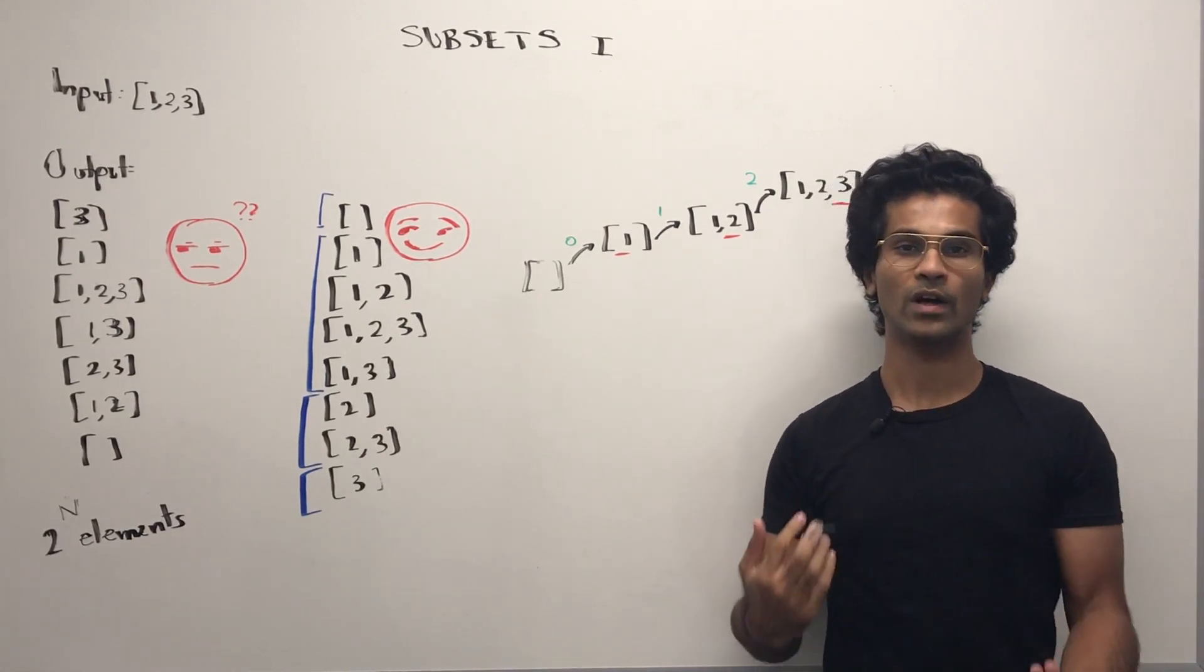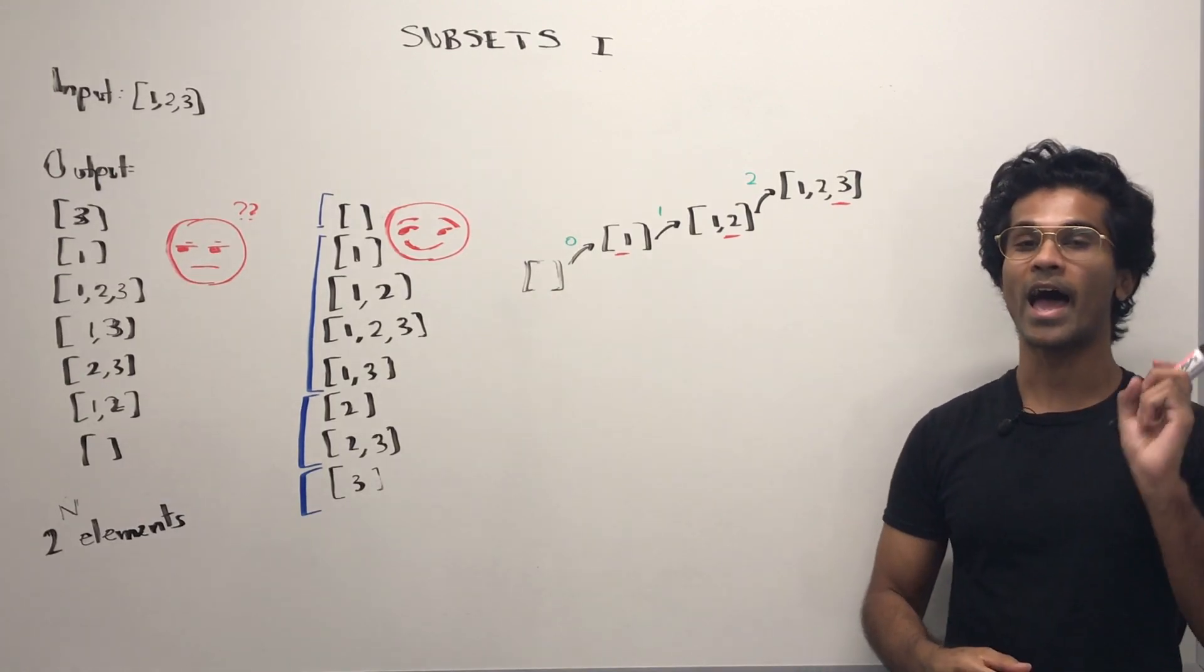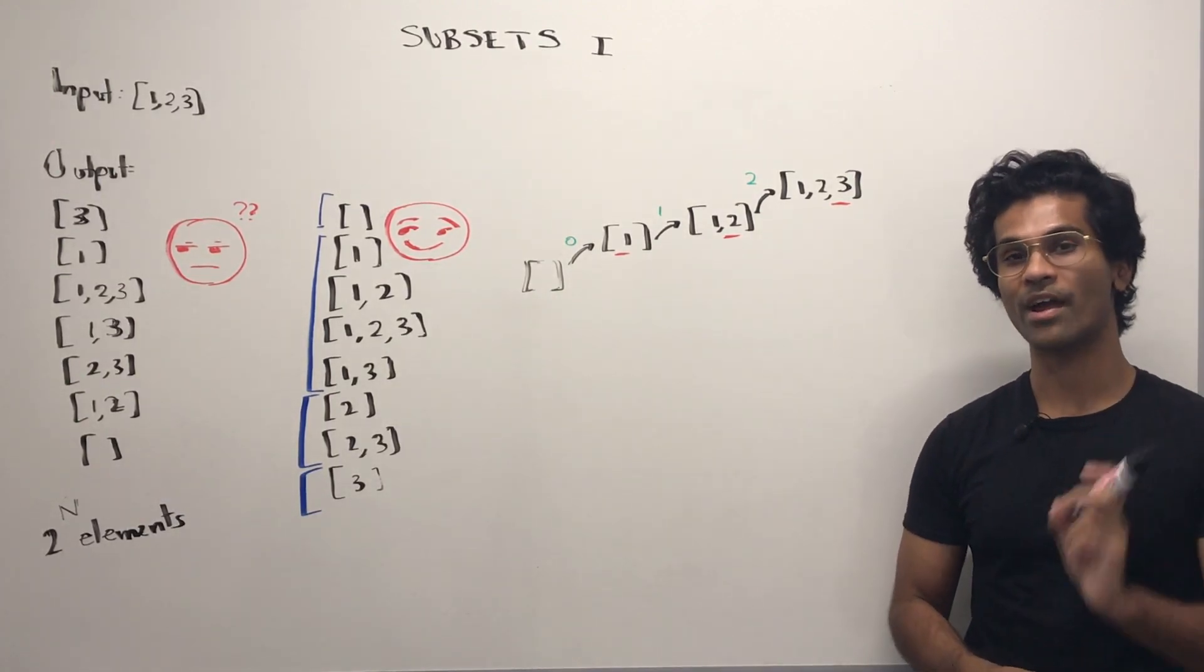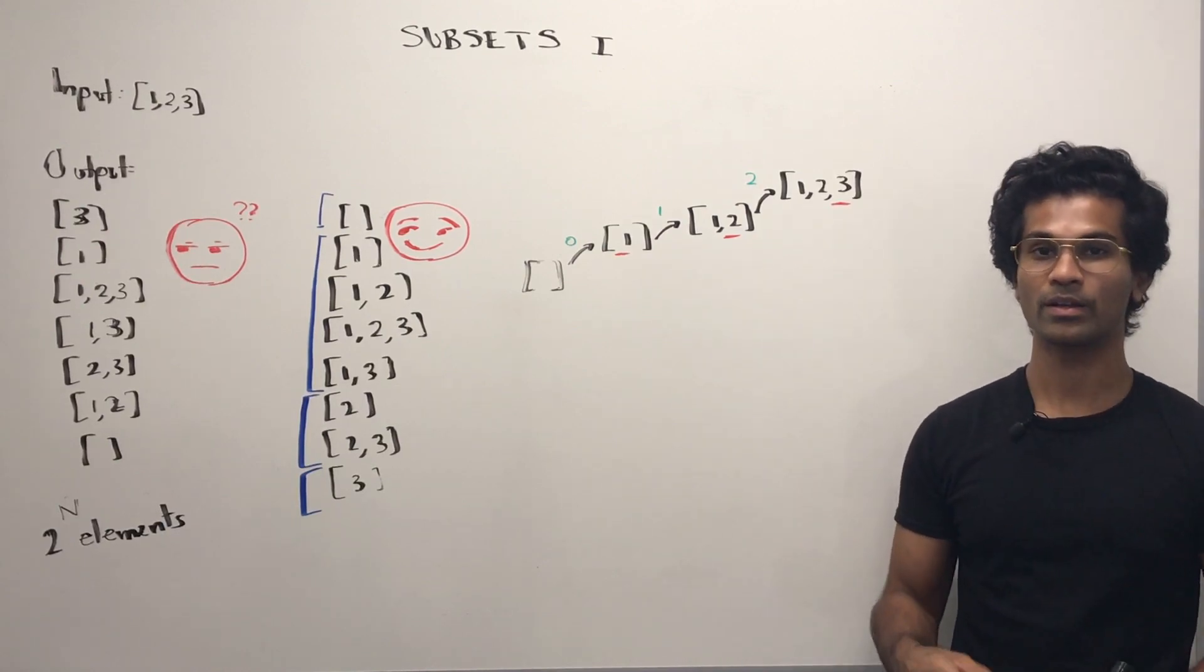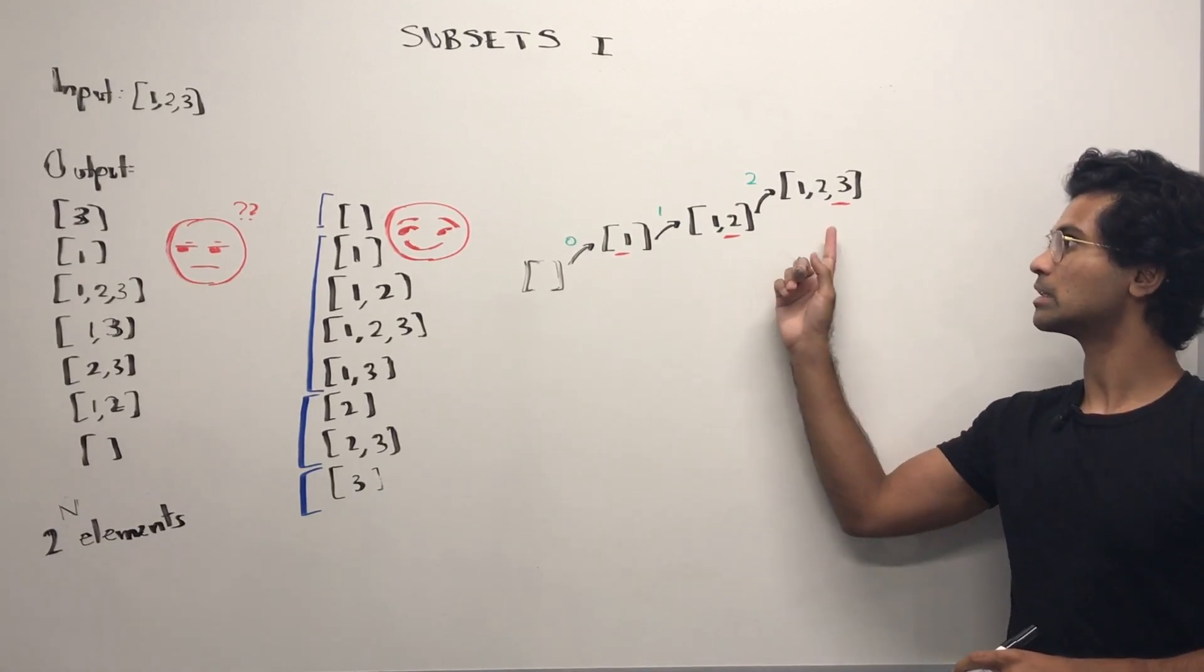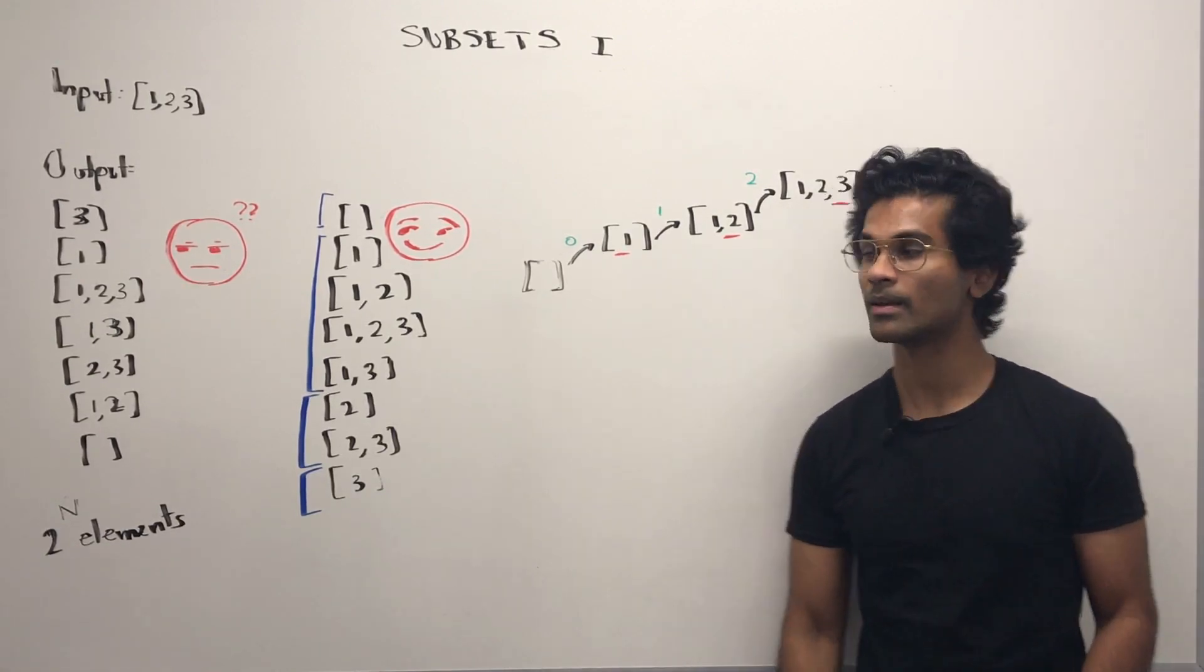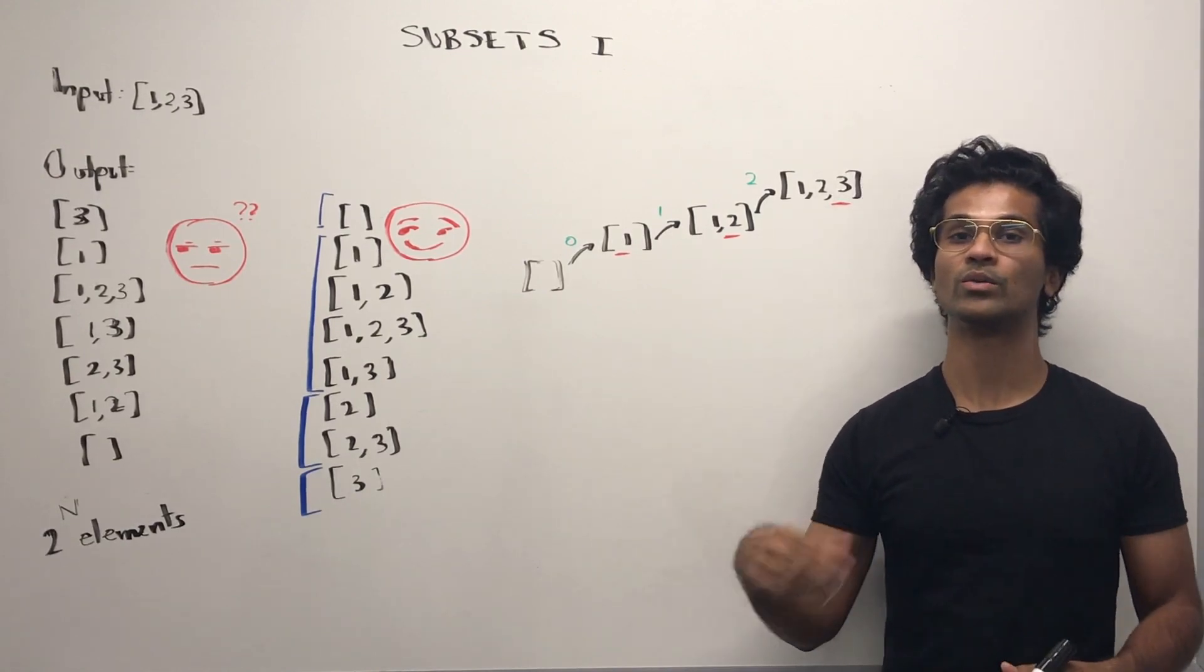So what we've done is taken our empty set and added a new number every time by incrementing some sort of a pointer, some variable, to know which new number we're adding. So the new numbers, as you can see, I've underlined in red. Now that we're at the end of the array, we can't add any more brand new numbers.